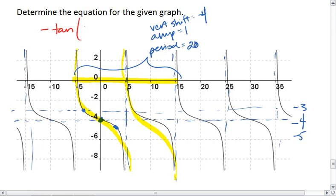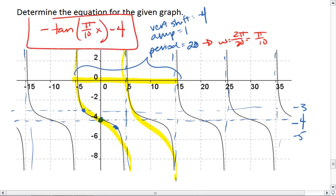The period is 20. That makes the angular speed 2 pi over 20, which equals pi over 10. We get tangent pi over 10x minus 4. And that's our final answer.